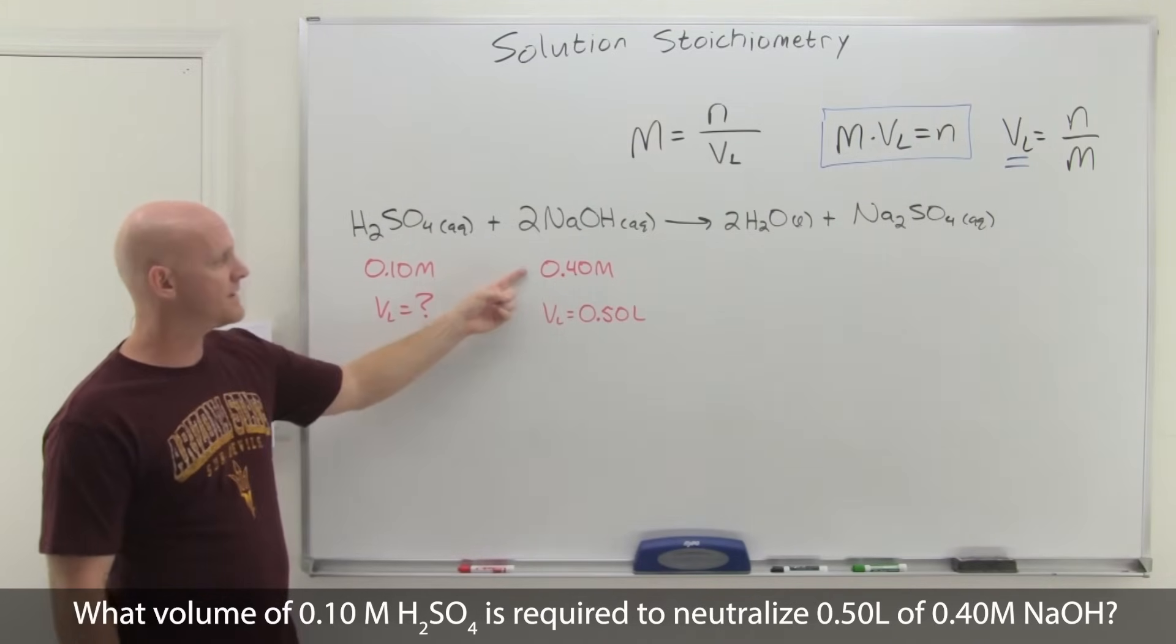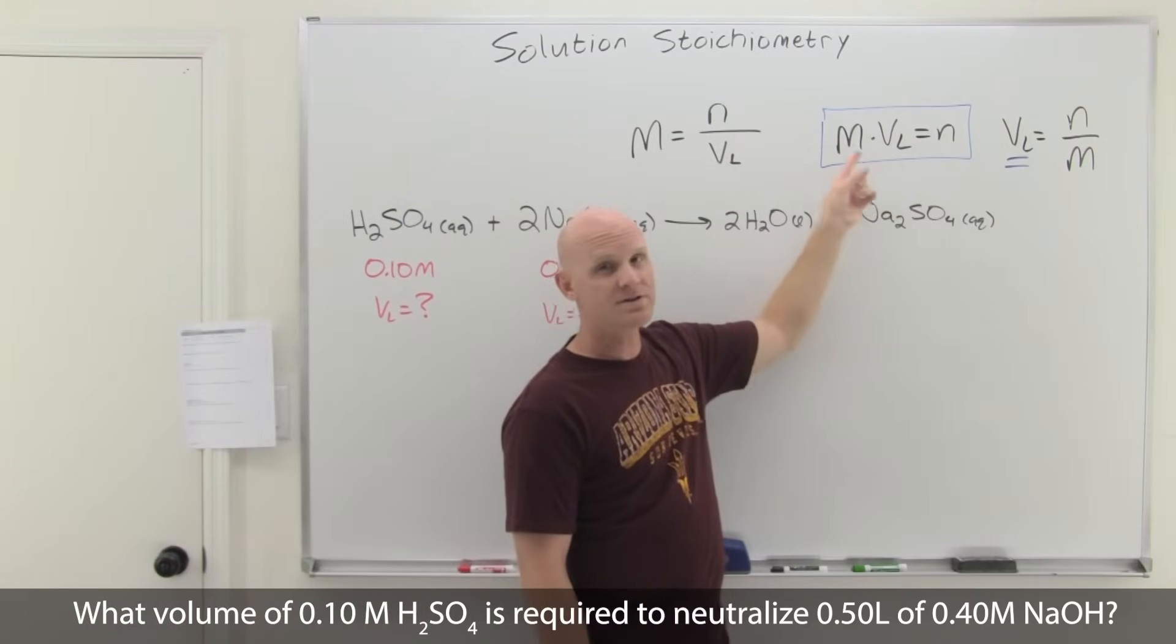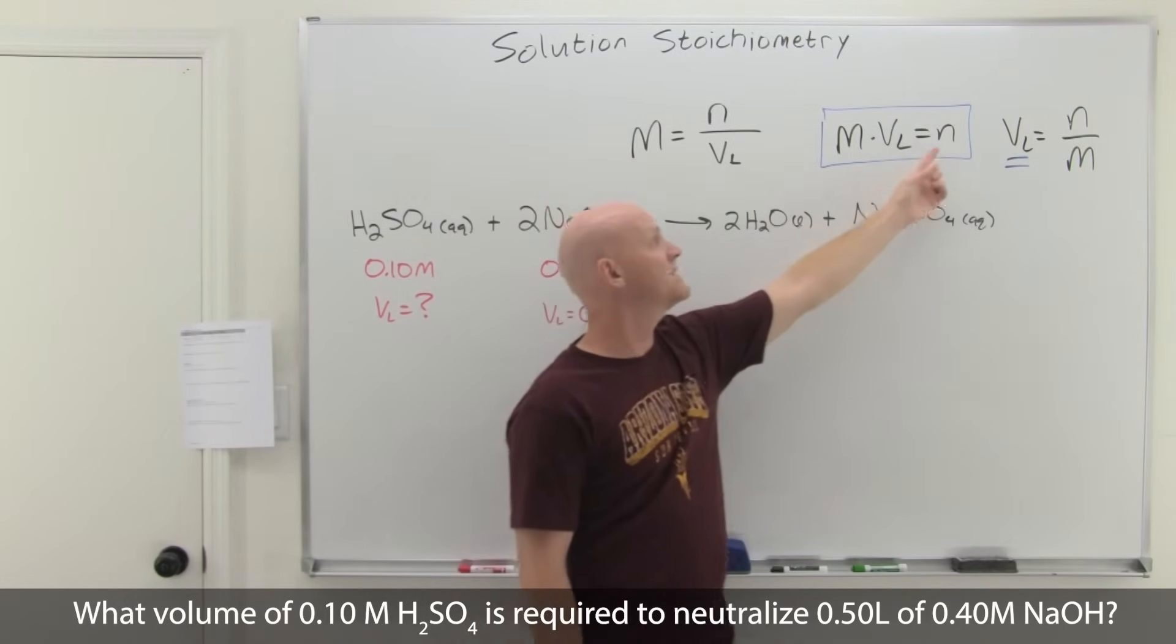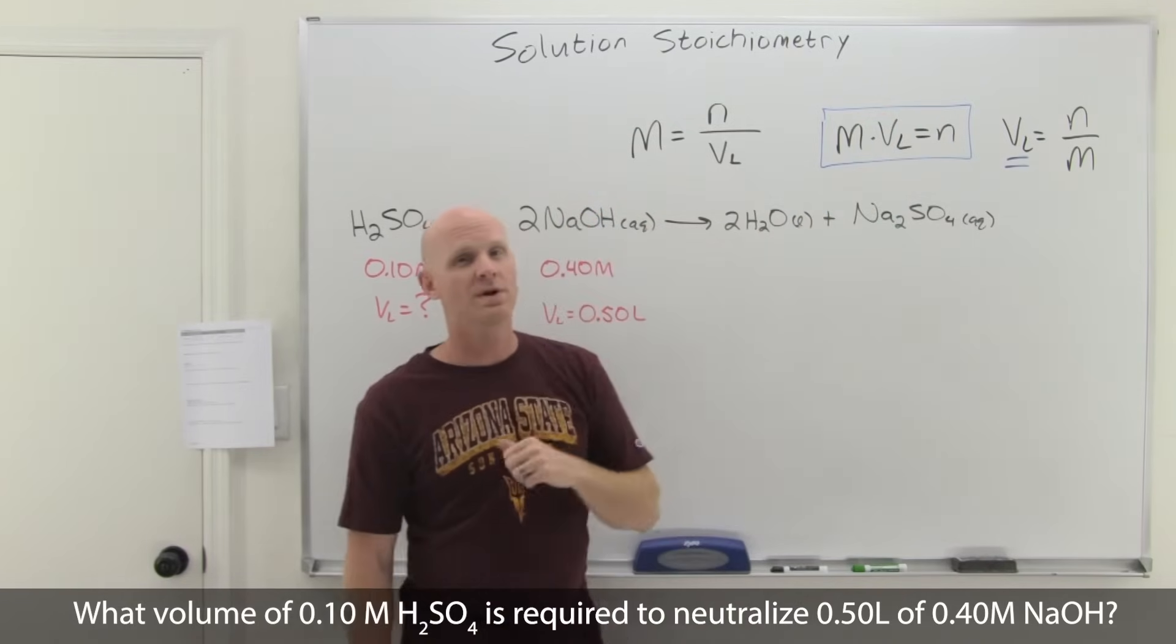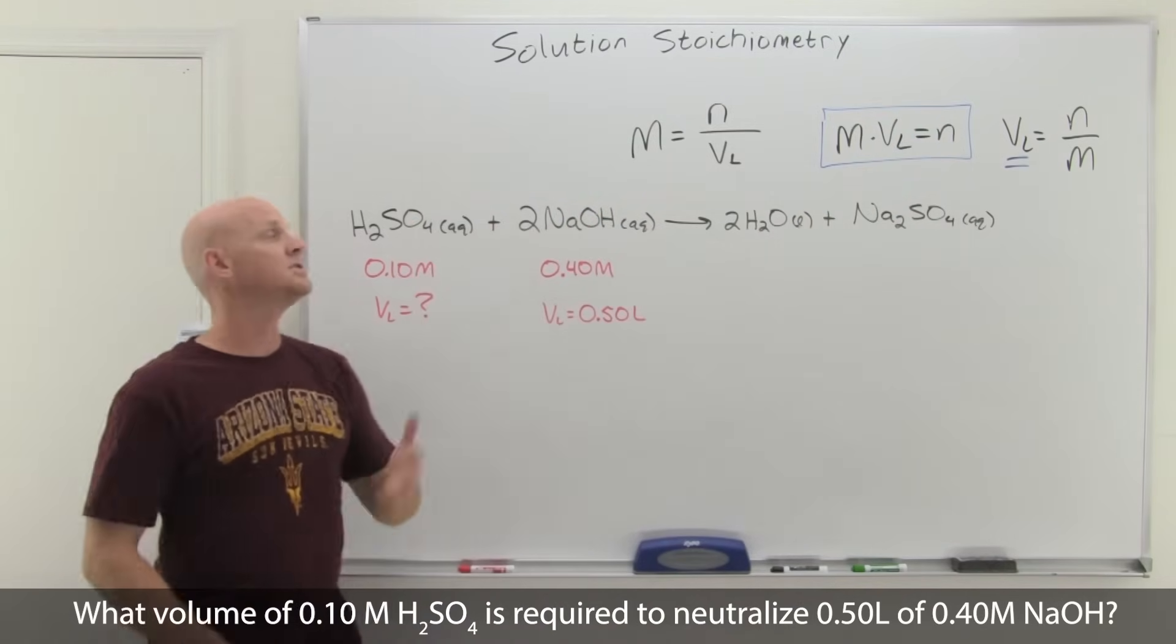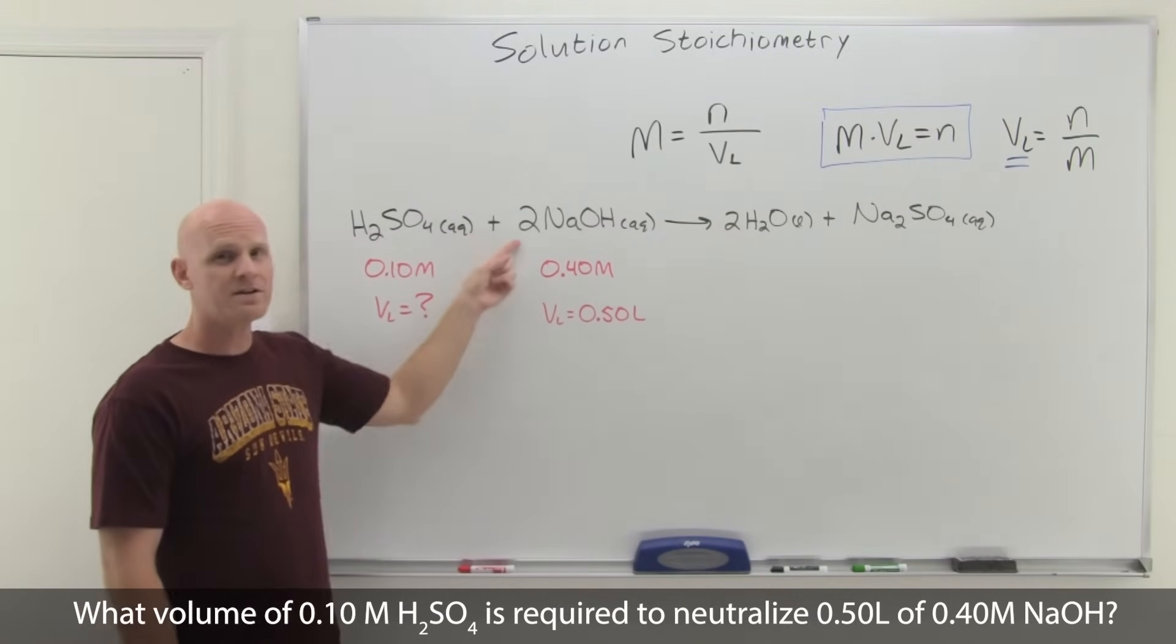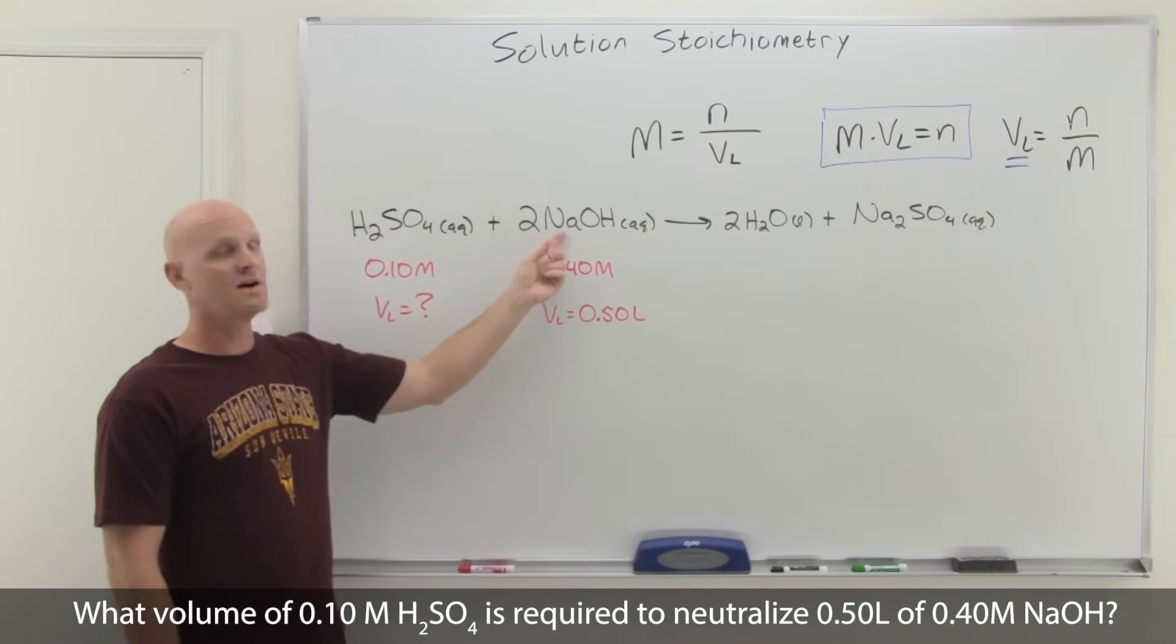If you were given the number of moles of NaOH, you could figure out the moles of H2SO4 based on that mole-to-mole ratio. You've been given both the molarity and the liters. If you're given the molarity and the liters, one of our expressions solves for the number of moles. It's the most important one because we now have a new way of calculating moles.